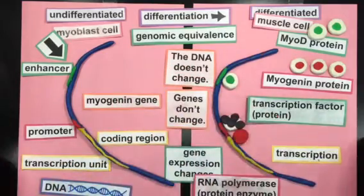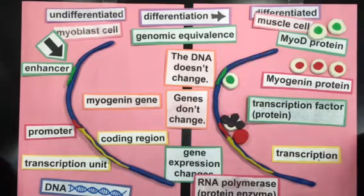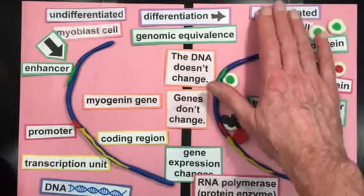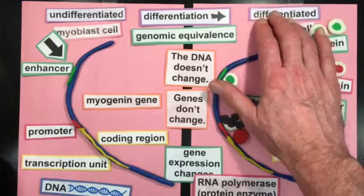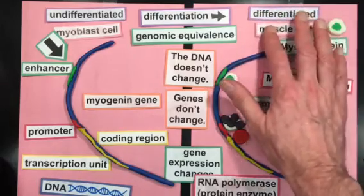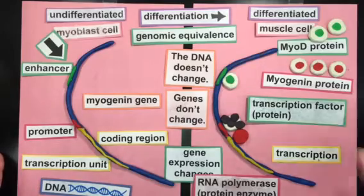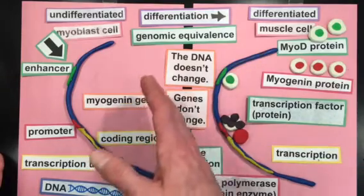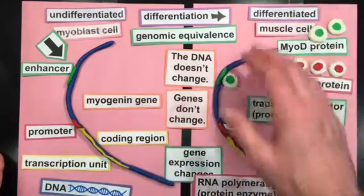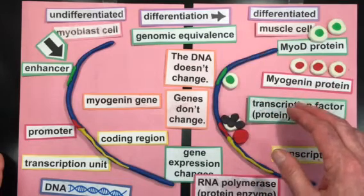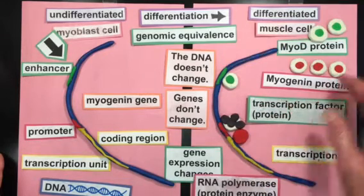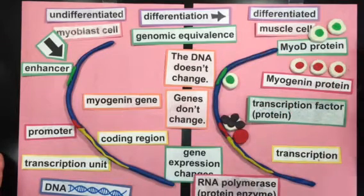In humans, there are about 2,000 different types of transcription factors, and different transcription factors are used in the differentiation of different types of cells — brain, kidney, skin, and so forth. In differentiation of muscle, several different transcription factors are essential for muscle differentiation, including MyoD and myogenin.